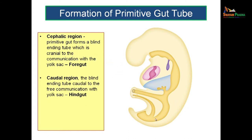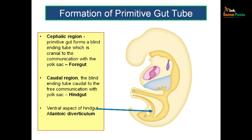The caudal region is again a blind ending tube known as the hindgut. This is caudal to the communication with the yolk sac. So cranial to this communication you call it the foregut, and caudal to this communication you call it the hindgut. Both these tubes are blind ending tubes in the initial period. On the ventral aspect of the hindgut, you will get an elongation known as the allantoic diverticulum, which will be pointing towards the umbilical cord because it is meant to vascularize the umbilical cord. The umbilical vessels are derived from the vessels of the allantoic diverticulum.